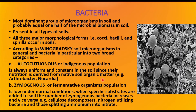The autochthonous population is always uniform and constant in soil since their nutrition is derived from native soil organic matter. The best examples are Arthrobacter and Nocardia. Whereas the zymogenous are also called fermentative organisms and are low under normal conditions. But when specific substrates are added to the soil, the number of zymogenous bacteria increases and vice versa. For example, cellulose decomposers, nitrogen-utilizing bacteria, and those splitting ammonium to nitrate. So one is indigenous — the permanent population present; the other is zymogenous — which increases when organic matter is more and decreases when it is less.